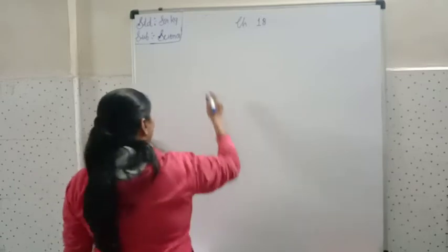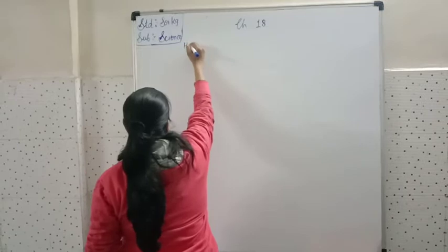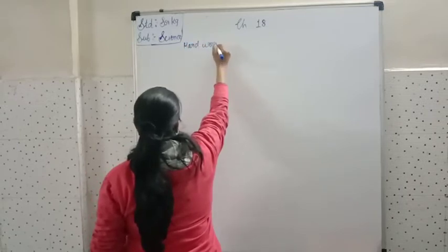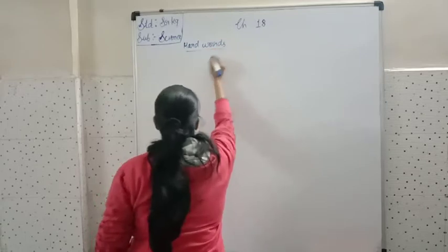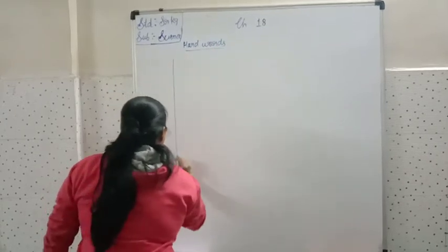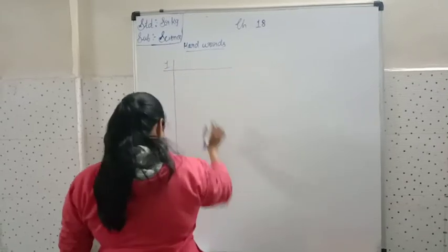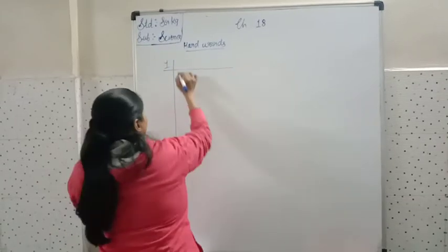Chapter number 18 is that you have three numbers. First of all, the first is hard words. So you have to start with hard words.